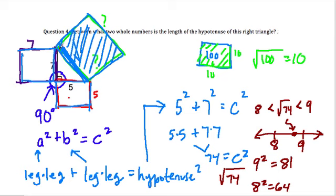So in this problem, they want to know, if you estimate the hypotenuse, what two whole numbers is it between? Well, it's between 8 and 9. All right, hope that helped.